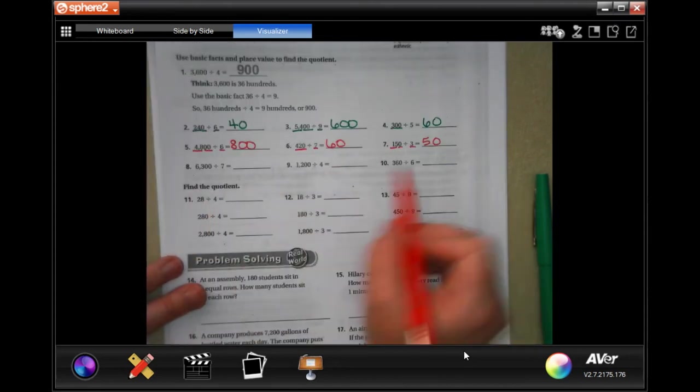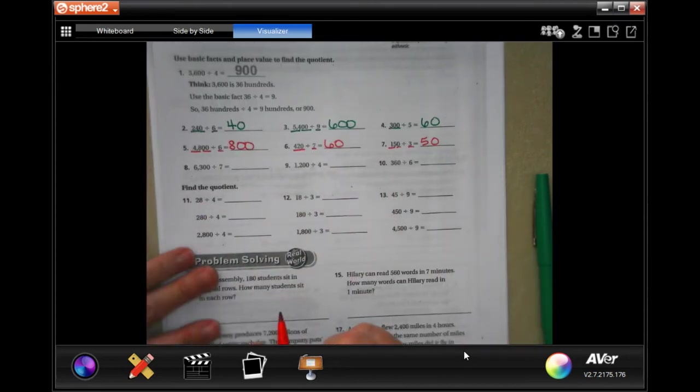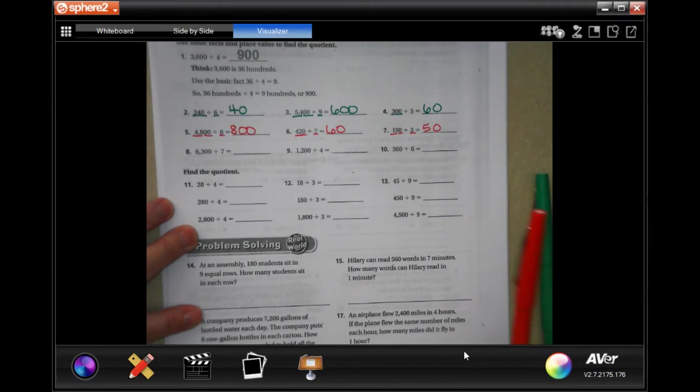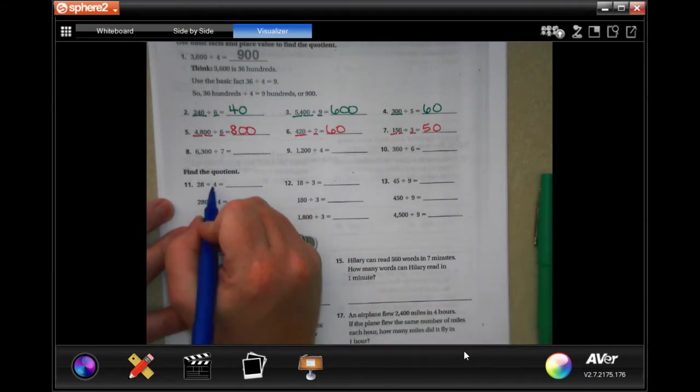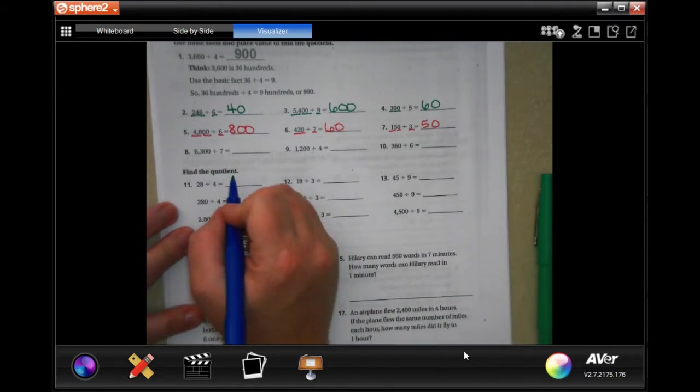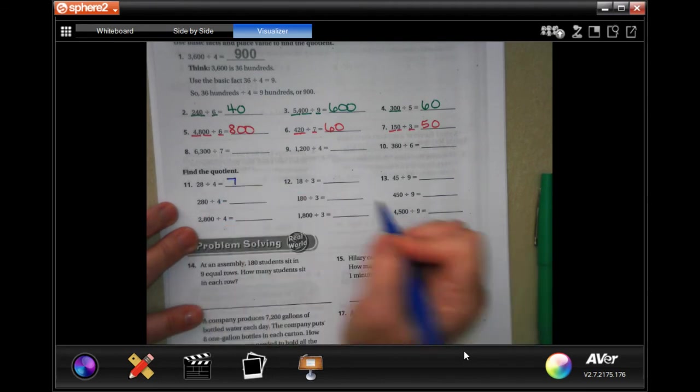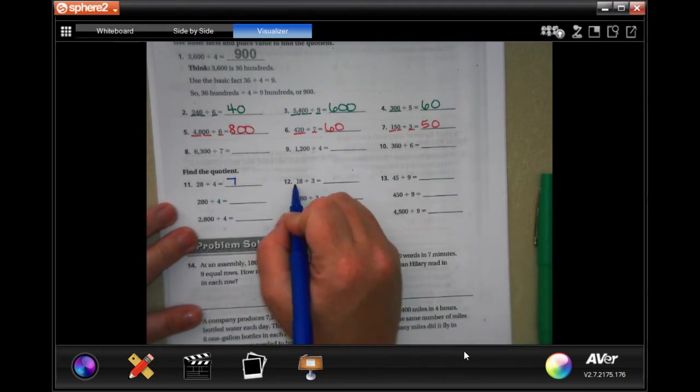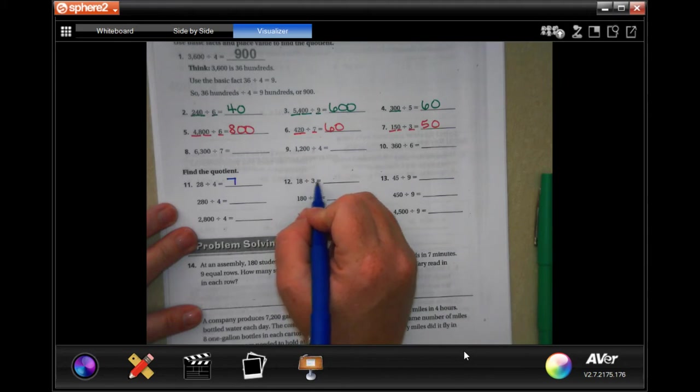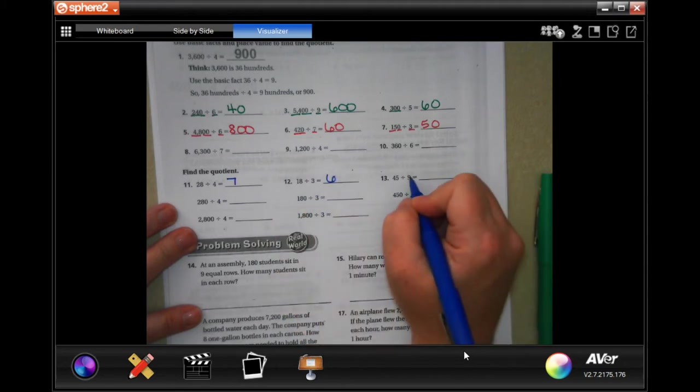I knew you guys are gonna love these. Three goes into fifteen five times and then add that zero on. You guys are gonna do eight through ten. Four goes into twenty eight. Well four times what is twenty eight? Four times seven. What times three equals eighteen? Three times six. Nine times what is forty five? Nine times five.